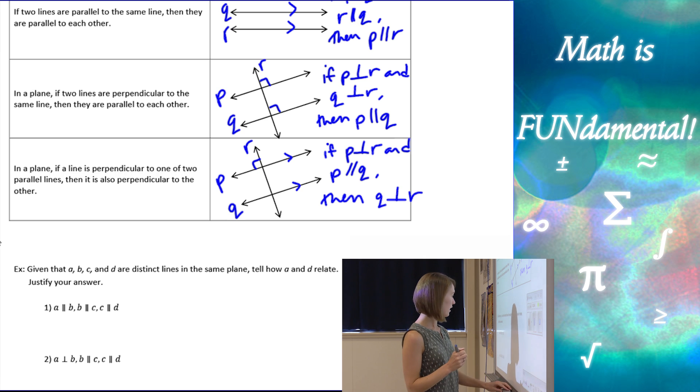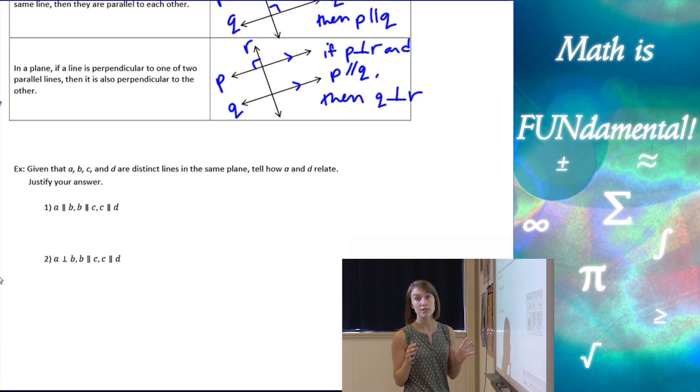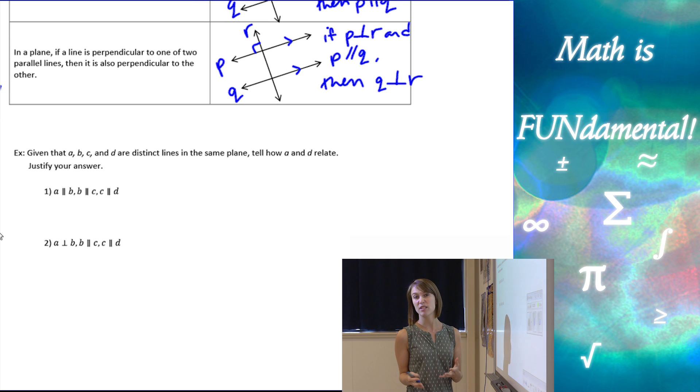All right. So, let's look at a couple examples here and use these theorems. Now, this isn't a proof and you might need to use these theorems in a proof again, but this will give you an idea of other things we can do with these theorems. So, given A, B, C, and D are all distinct lines in the same plane.